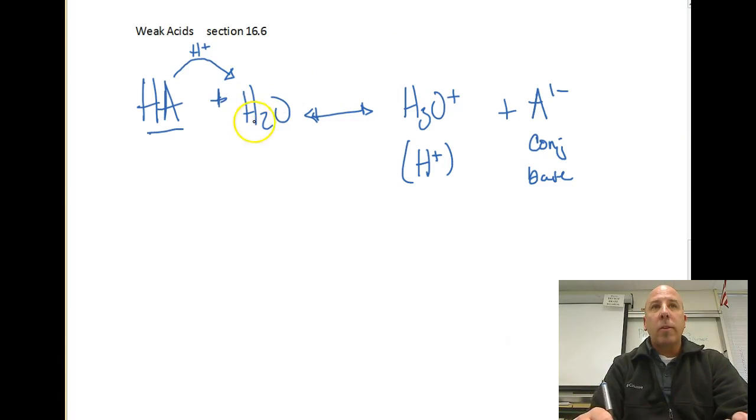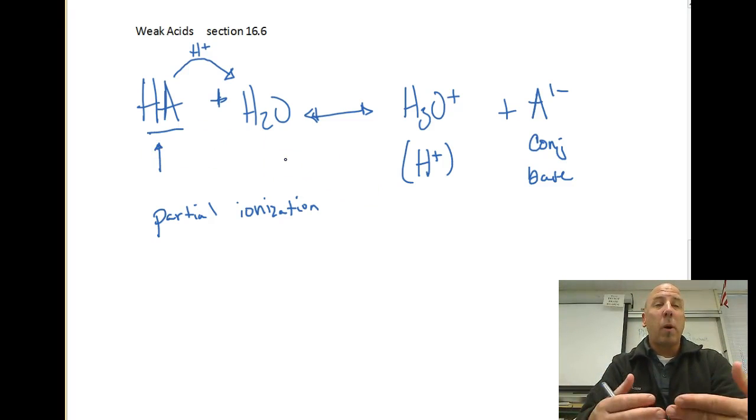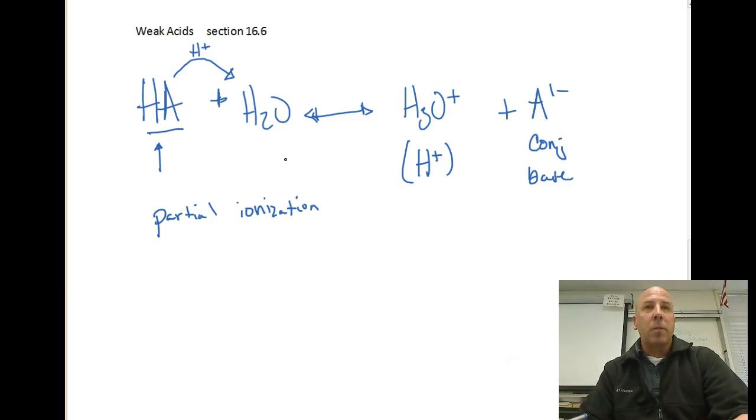Now, because this is a weak acid, and we have only partial ionization, what partial ionization means is not all of the hydrogen ions from this weak acid are going to be donated to the water, only some of them, actually a very small percentage in most cases, which is what makes it different from a strong acid, we can then write a Ka expression.